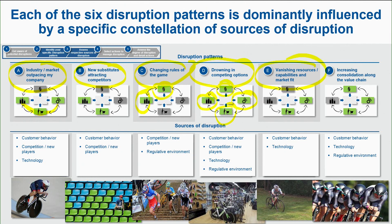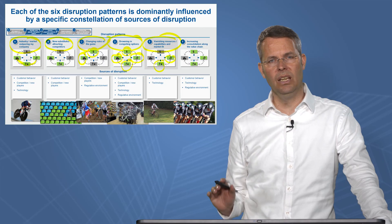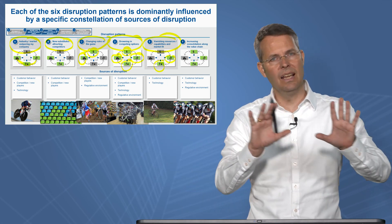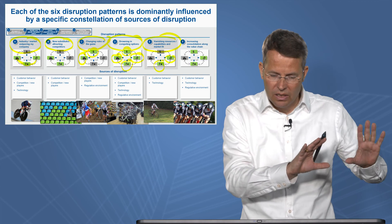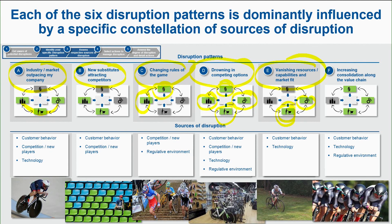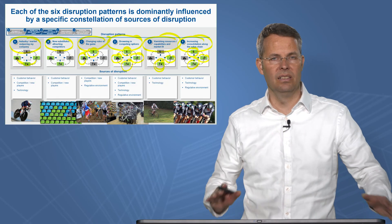The fifth pattern — vanishing resources, capabilities, and market fit — is a question of technology and customer behavior. The change starts with technology; with the internet, old catalog businesses have to go online because customers want to buy that way. For the sixth pattern — consolidation along the value chain — insurance companies are being deregulated, new technologies are emerging, and new ways of interacting with customers are what the market demands.